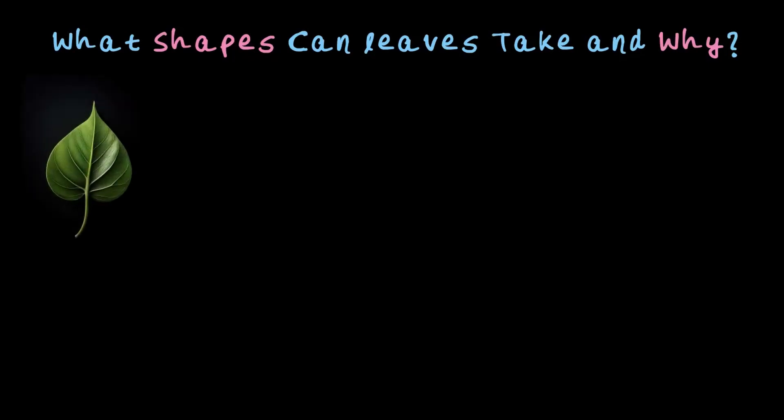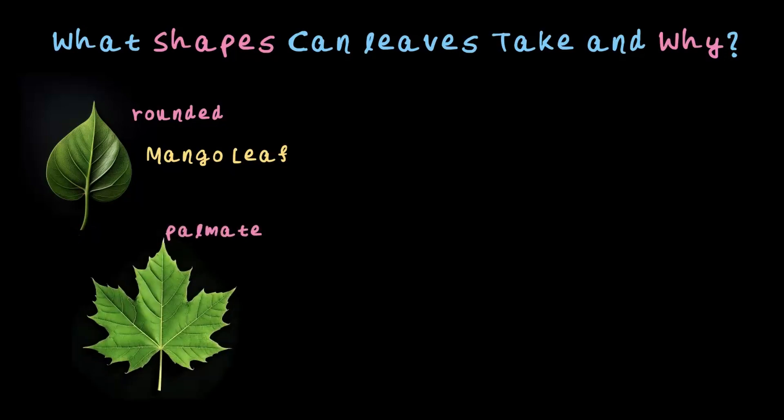Let's talk about the shapes leaves can take and why they have these shapes. The first one here is rounded like a mango leaf. This shape is super common. It's probably the first thing that you think of when you imagine a leaf. Next up, we have palmate. It's a maple leaf that you're seeing here. They look like a hand with fingers spread out. They are a distinct type of leaves.